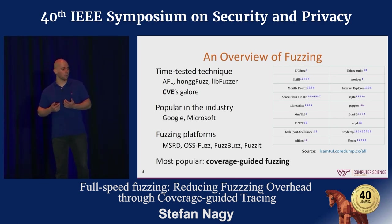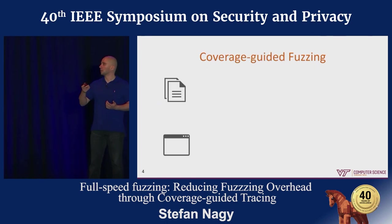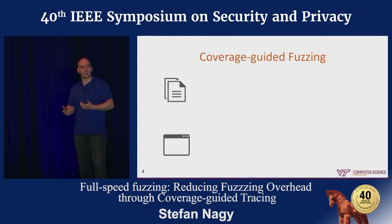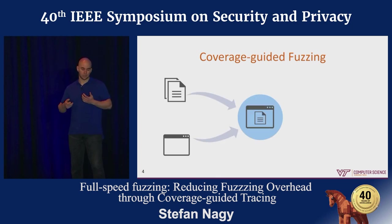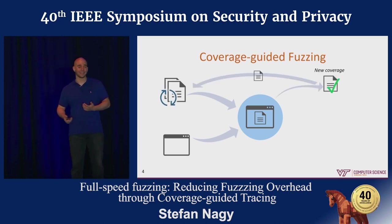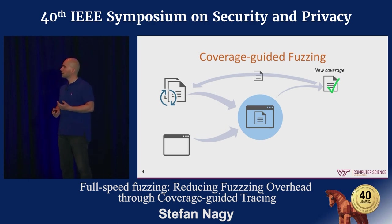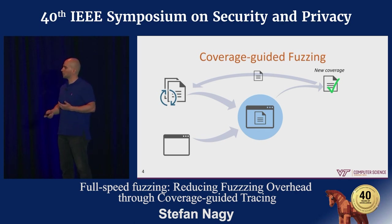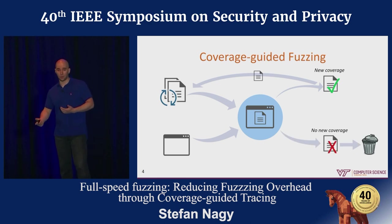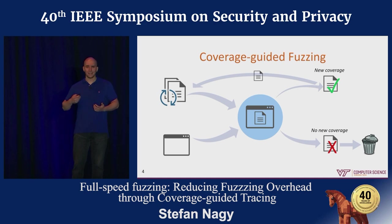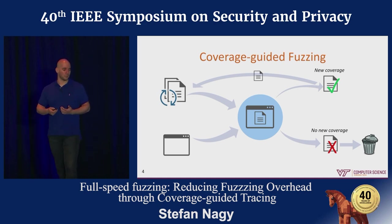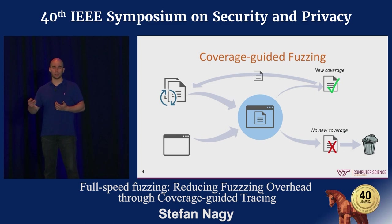By far the most popular approach in fuzzing is called coverage-guided fuzzing, which at a high level operates as follows. Given a target application and some test cases for it, the fuzzer executes these test cases against the target application and measures each one's code coverage — basically how far they get in the target application's code. Test cases which increase code coverage are preserved, meaning they've found some new part of the code that others have not, and all those which don't are simply discarded. The end goal is to exhaustively traverse the program code and find those few test cases that trigger bugs or vulnerabilities.